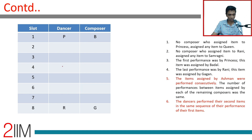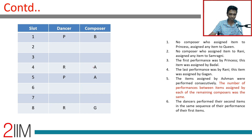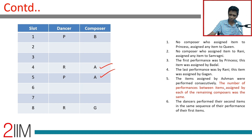After this, same order applies. So position 5 should be R, position 6 should be P — wait, P is first so P should be fifth. Whatever is fourth should be eighth. Ashman's two assignments should be here and here consecutively. The remaining composers appear in the same order in round one and round two.